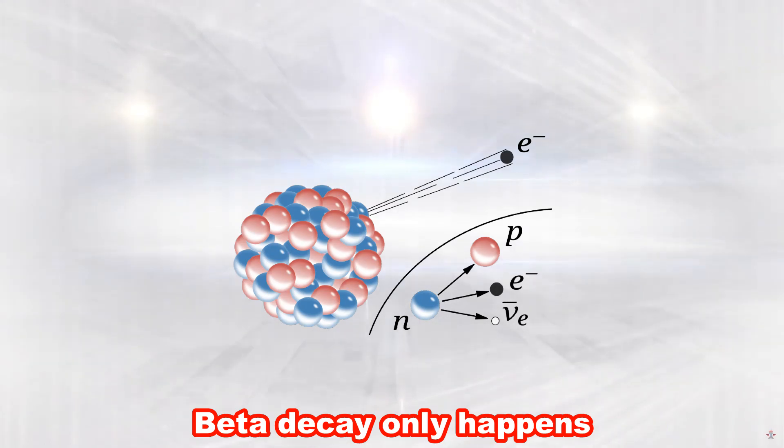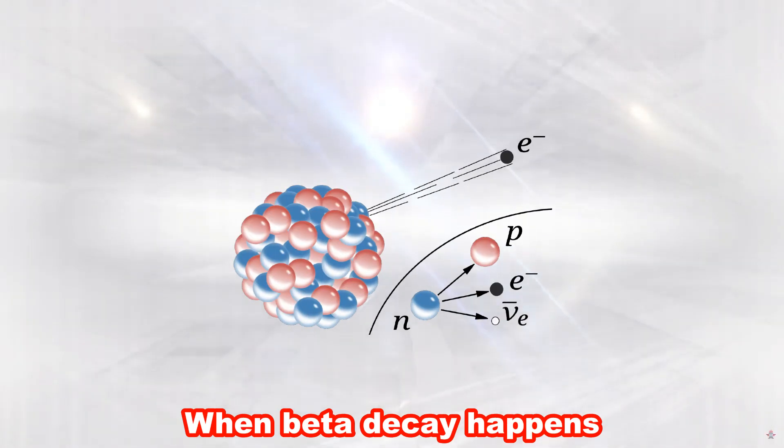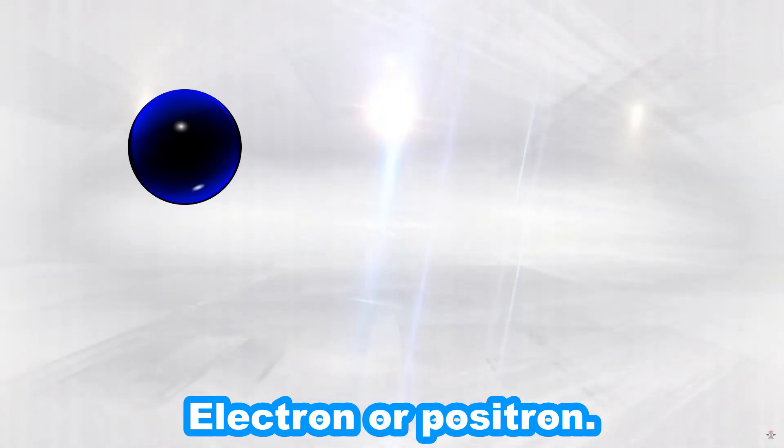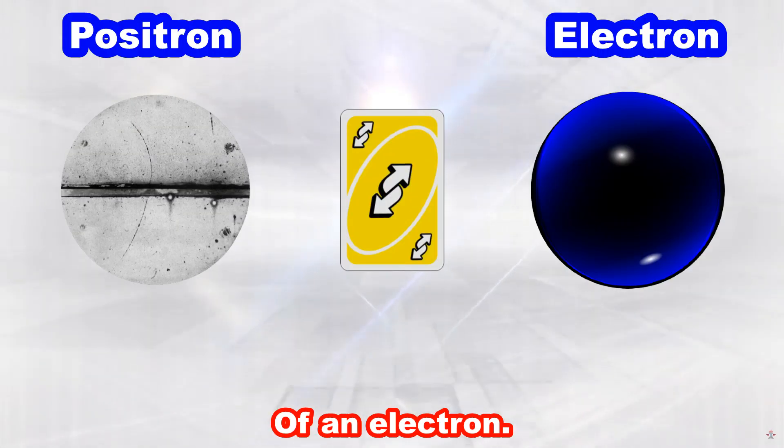Beta decay only happens to small radioactive elements. When beta decay happens a beta particle gets emitted. A beta particle is a fast electron or positron. A positron is the antiparticle of an electron.